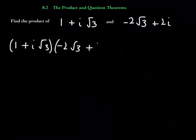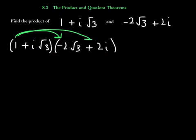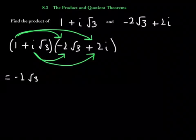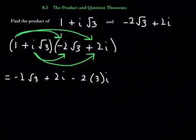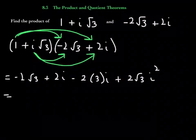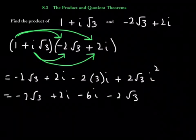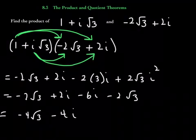So it'll be something like the following. 1 times negative 2 root 3, 1 times 2i, and then i root 3 times negative 2 root 3, and i root 3 times 2i. So let's go for it. First, we're going to have negative 2 root 3, then plus 2i, and then you'll have negative 2 times 3i, and then you'll have plus 2 root 3i squared. This gives us negative 2 root 3 plus 2i minus 6i minus 2 root 3, because i squared is equal to negative 1. So this will be equal to negative 4 root 3 minus 4i. So we found the product.